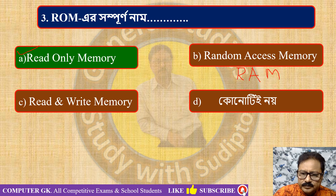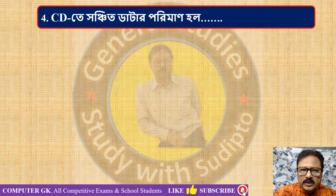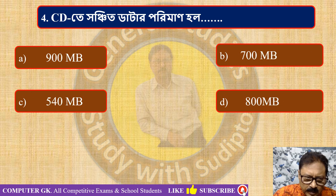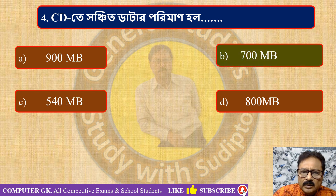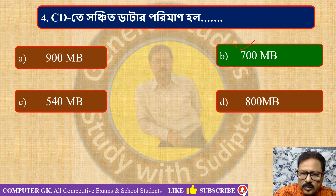A CD can store up to 700 megabytes of data — either 700 MB, 544 MB, or 800 MB. A CD is typically made to hold 700 megabytes. CD stands for Compact Disc. MB means megabytes.